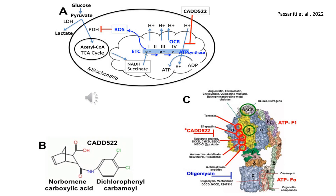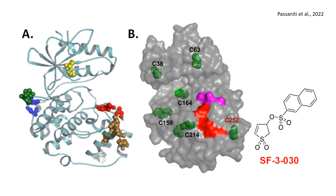This interaction disrupts ATP synthesis and increases oxidative stress, ultimately affecting cancer cell viability. In Panel A, the ribbon structure of ERK2 (PDB: 4GT3) highlights key functional domains.